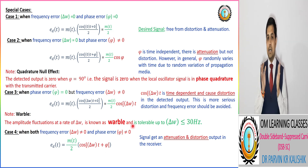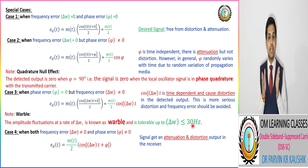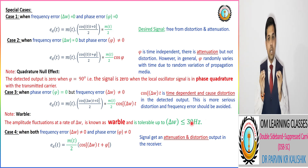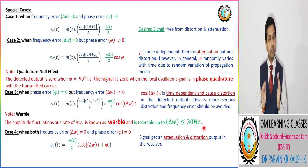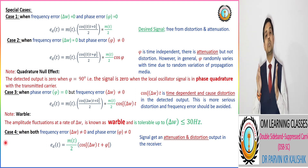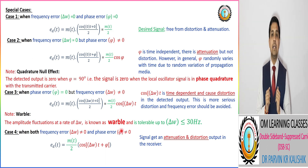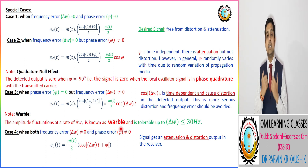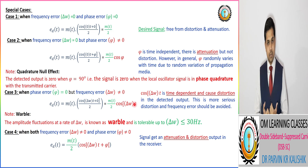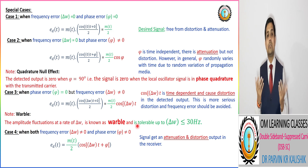The receiver can tolerate frequency error only up to 30 Hz. If the frequency error is more than 30 Hz, the distortion exceeds the tolerable limit at the receiver, and as a result we cannot recover the message signal.